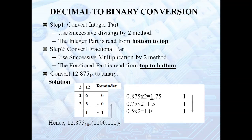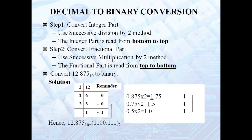Let us see how to convert decimal to binary. In a decimal number, there are two parts: before the decimal point is called the integer part, and after the decimal point is called the fractional part. Step 1: convert the integer part using the successive division by 2 method and read the result from bottom to top. Step 2: if there is a fractional part, convert it using the successive multiplication by 2 method and read the result from top to bottom.